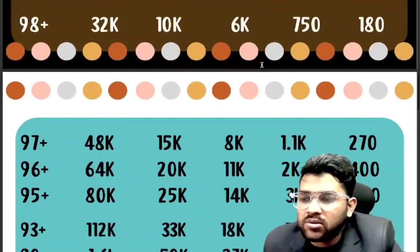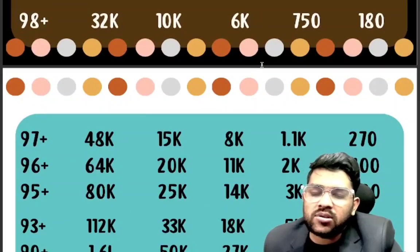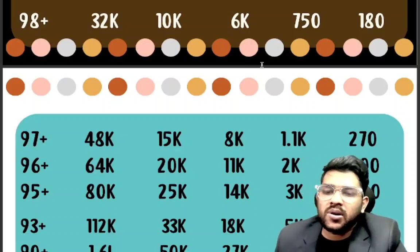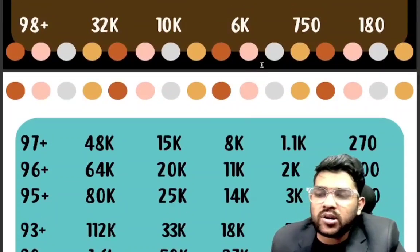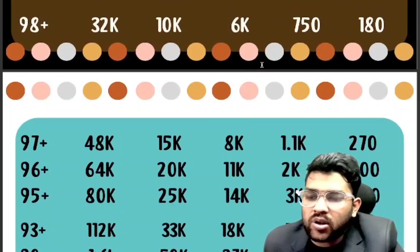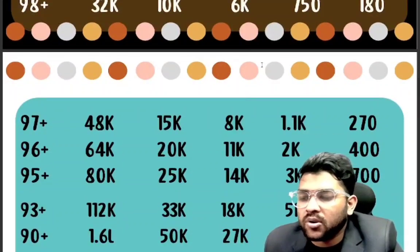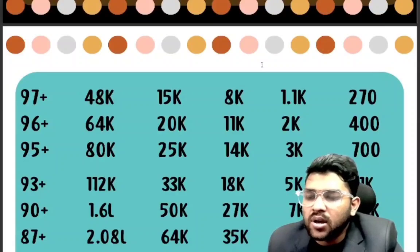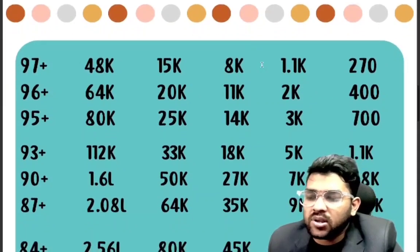For 97 percentile: general rank 48,000; OBC 15,000; EWS 8,000; SC 1,100; ST 270. For 96: general 64,000; OBC 20,000. For 95: general 80,000; OBC 25,000. For 93 percentile: general 1,00,000; OBC 33,000.